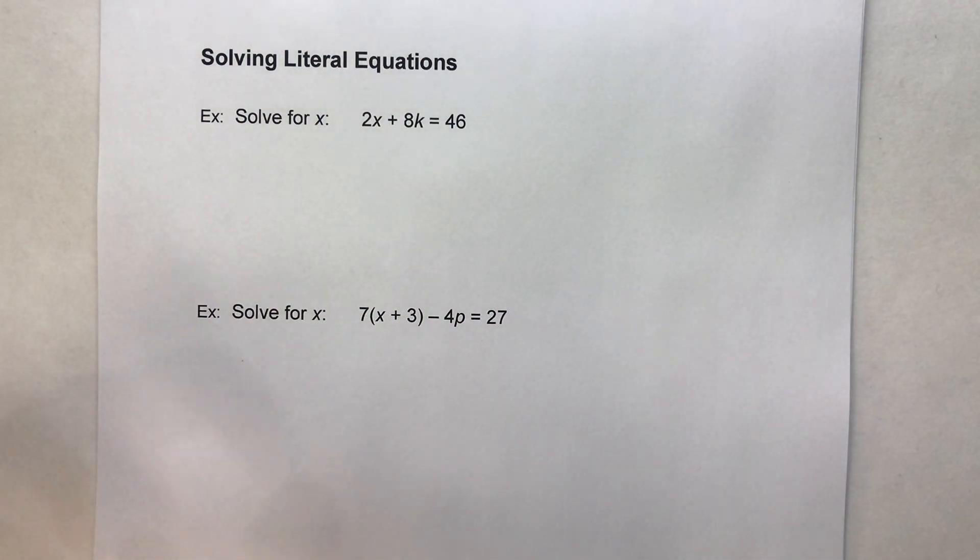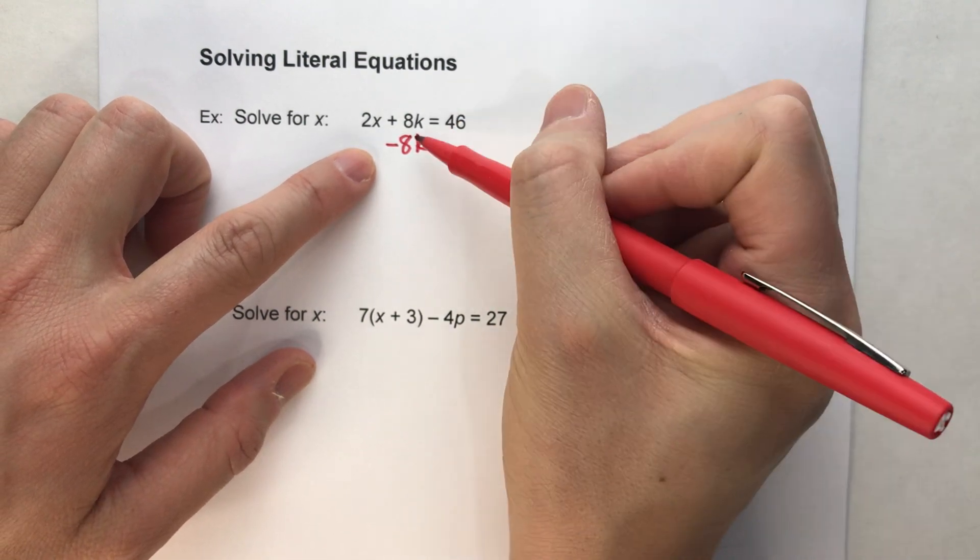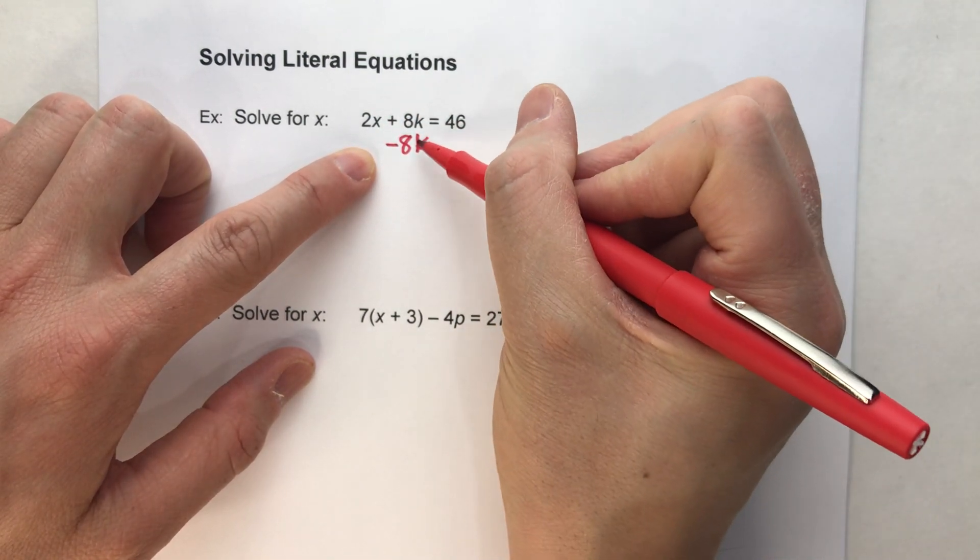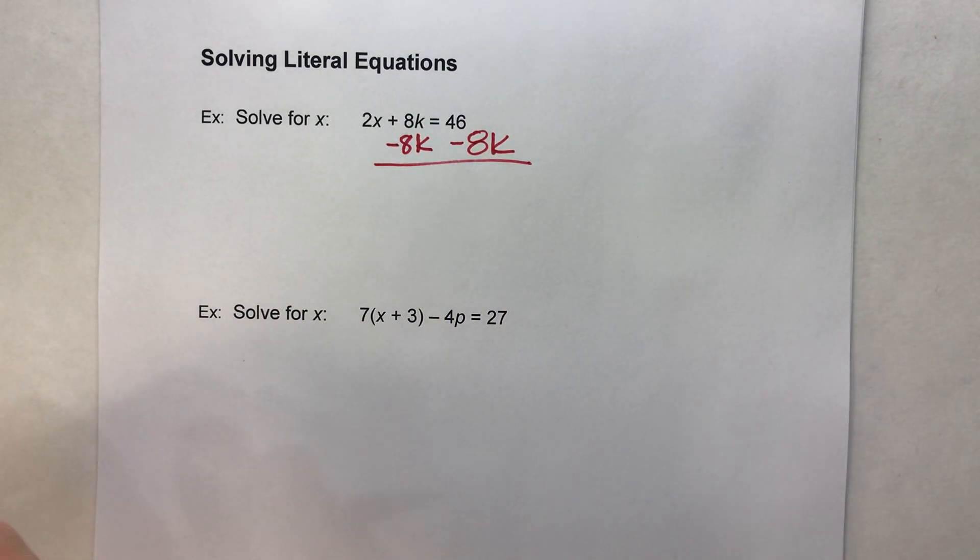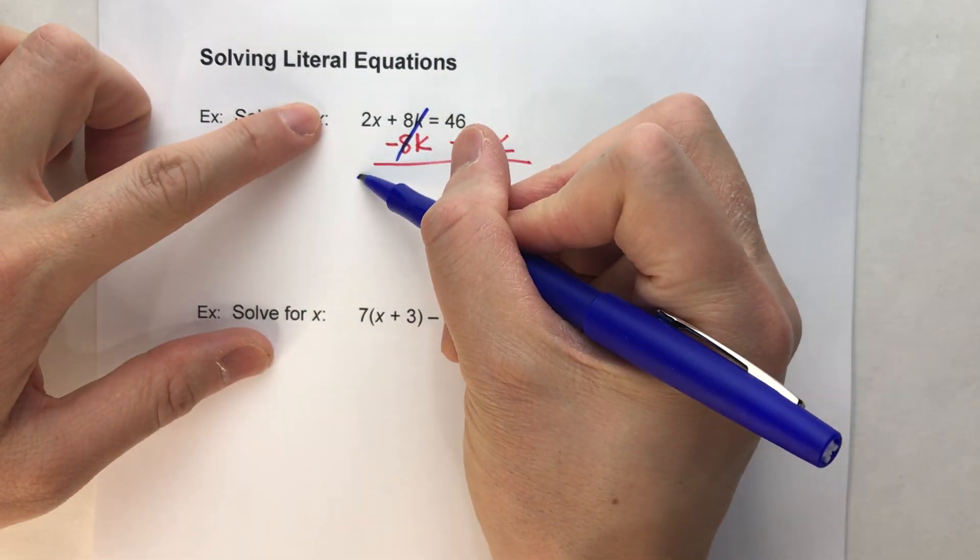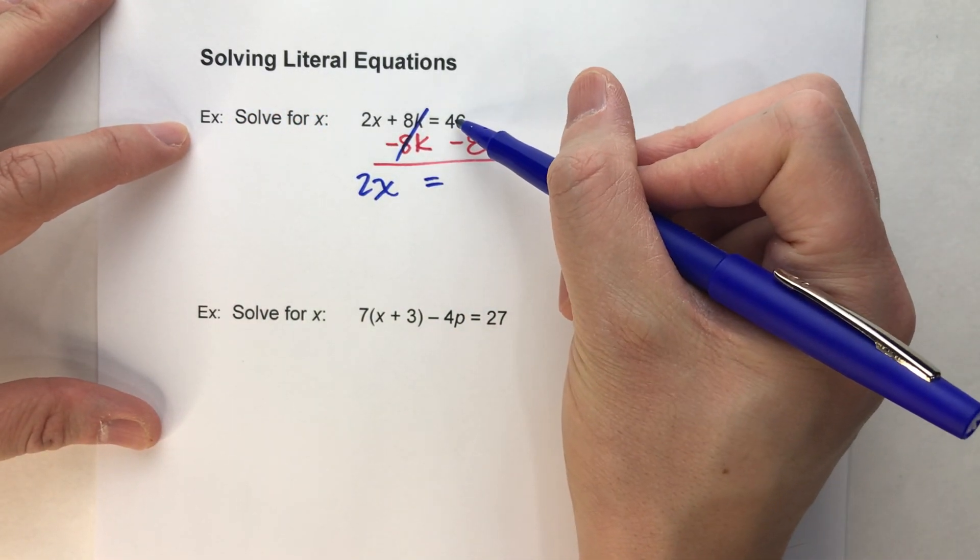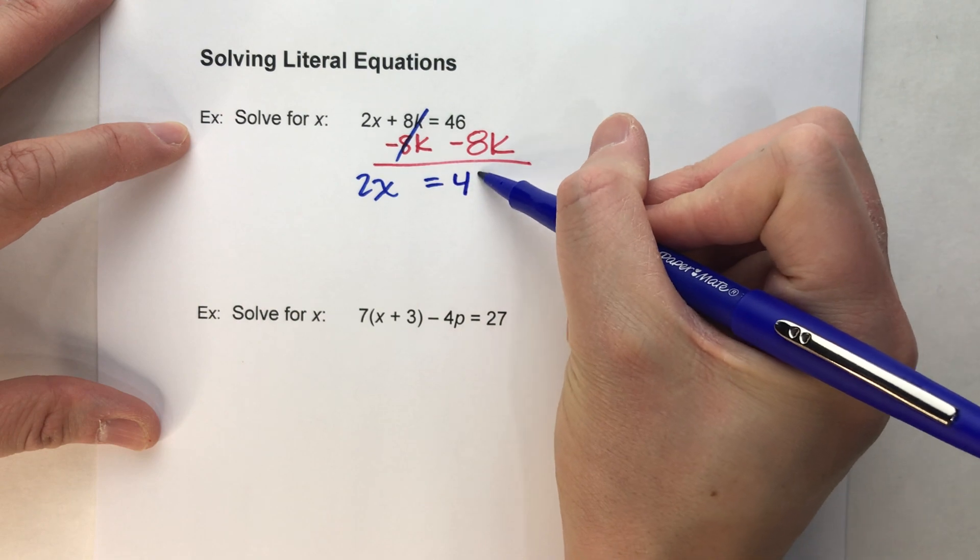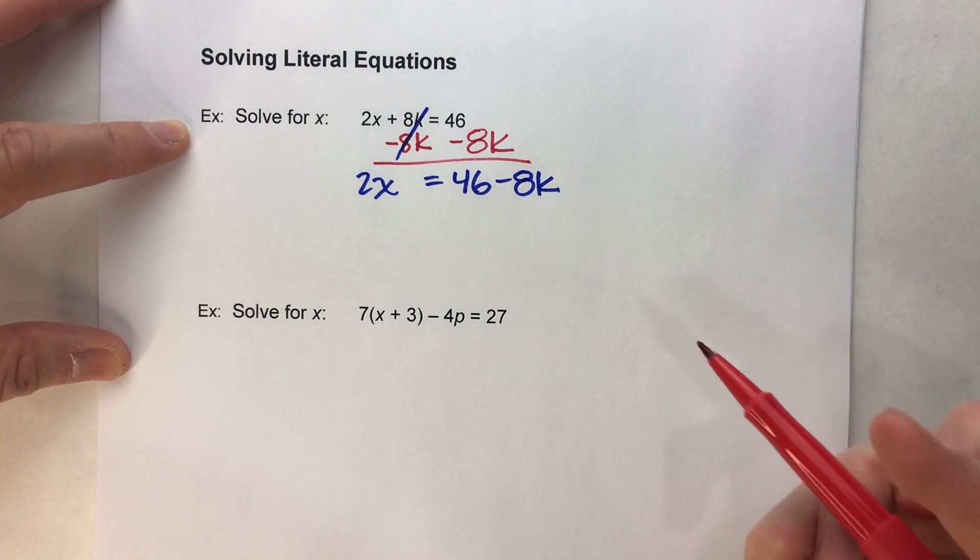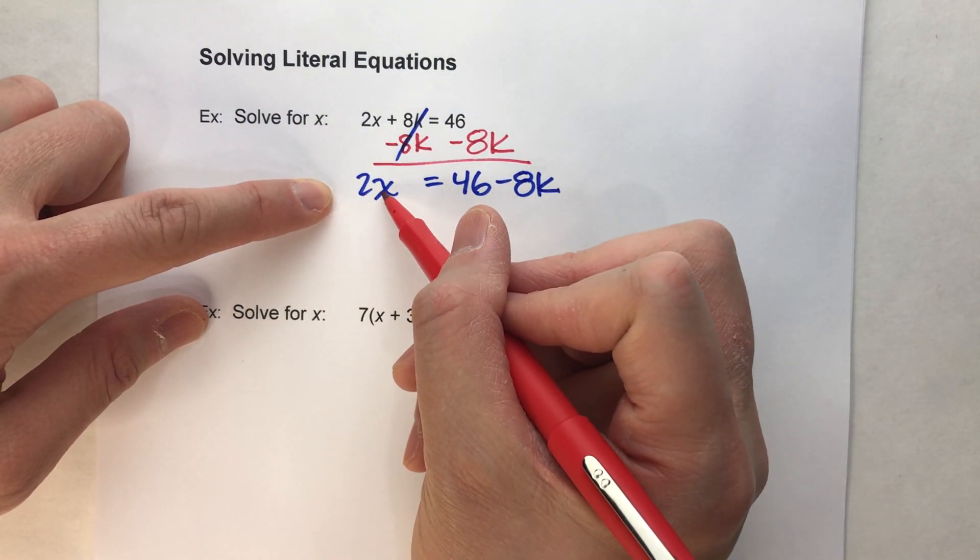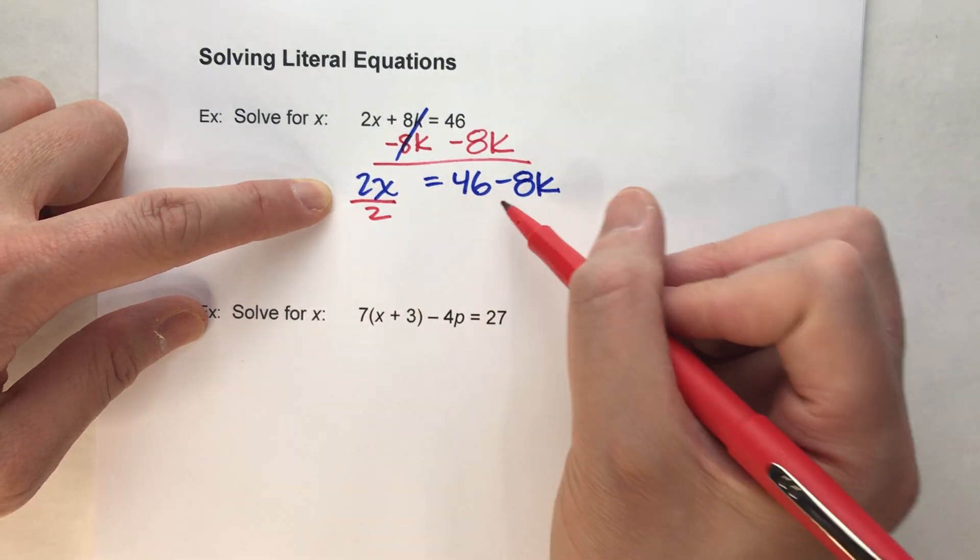Now I want to get x by itself, so my first step is I'm going to subtract 8k from this side of the equal sign so I get x alone. What I do to one side, I have to do to the other side, and when I do that, the 8ks undo each other, but the 2x drops down. Now I've almost got x alone, but it's x times 2, so I need to divide by 2 to undo that. What I do to one side, I have to do to the entire other side.